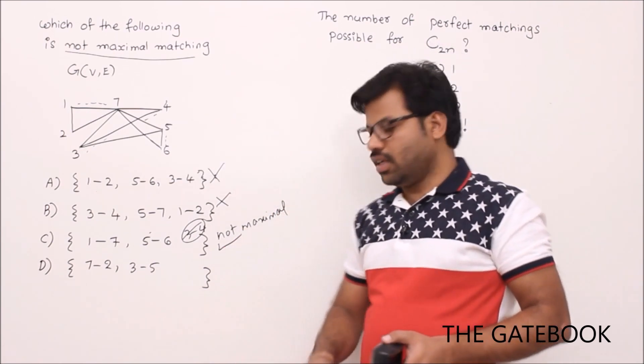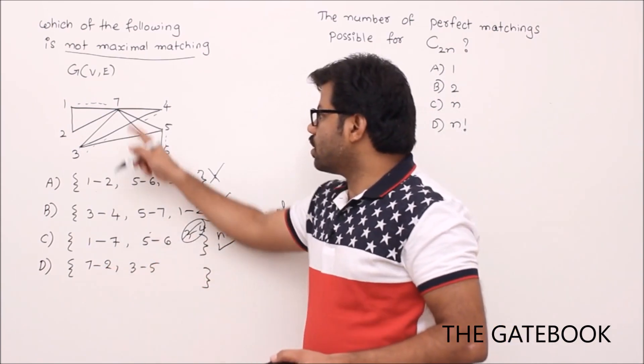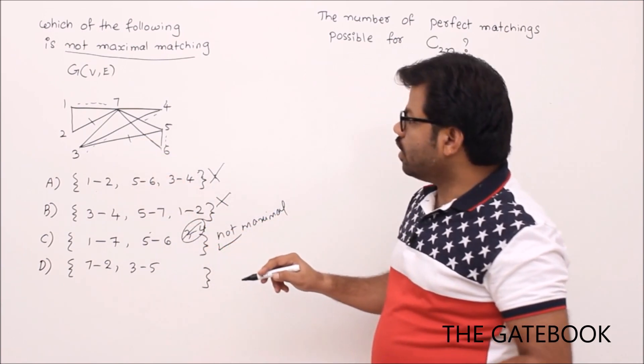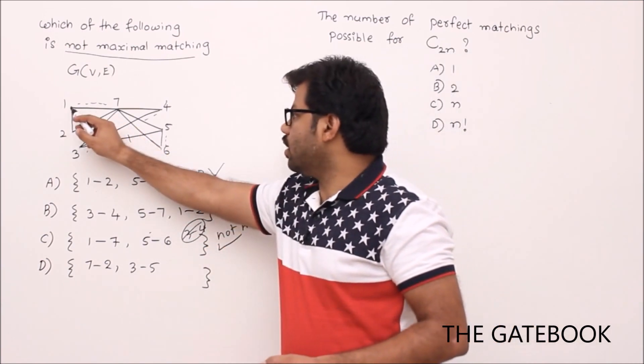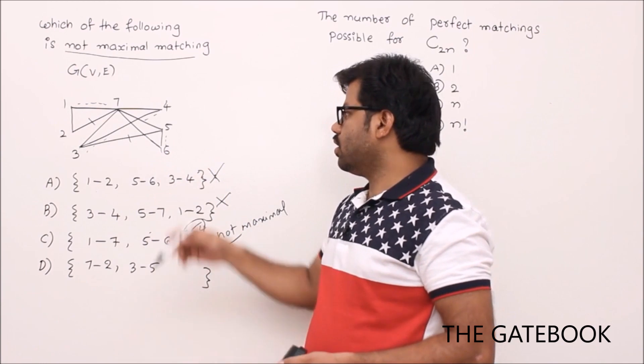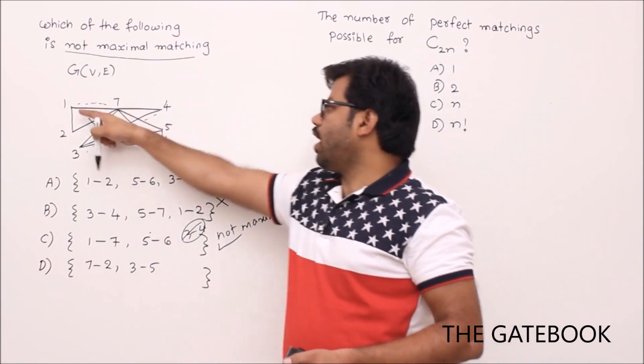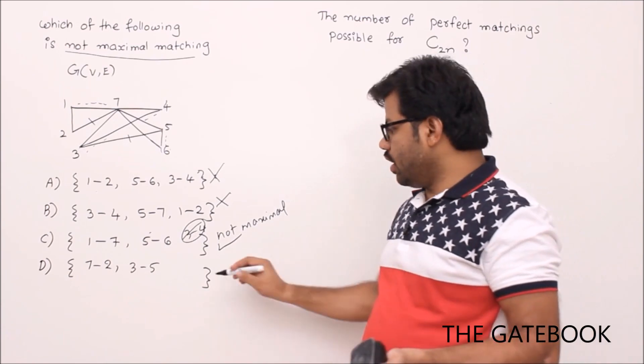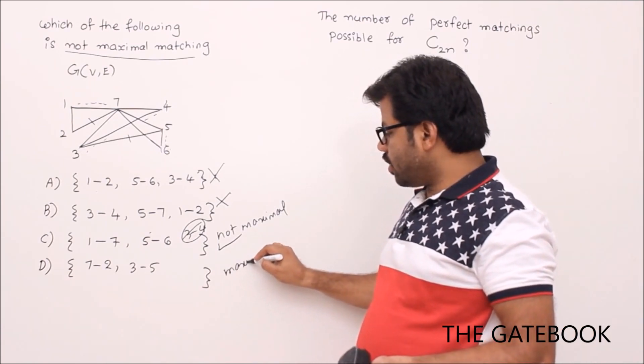Then old matching is not maximal. This is not maximal. I want not maximal matching, that's why it's a right choice. Next, 7 to 3, 5-4. 7 to 3, 5 - let's mark 7 to 3, 5. Can I add 1-6? There is no edge. Can I add 4-6? No. Can I add 1-4?